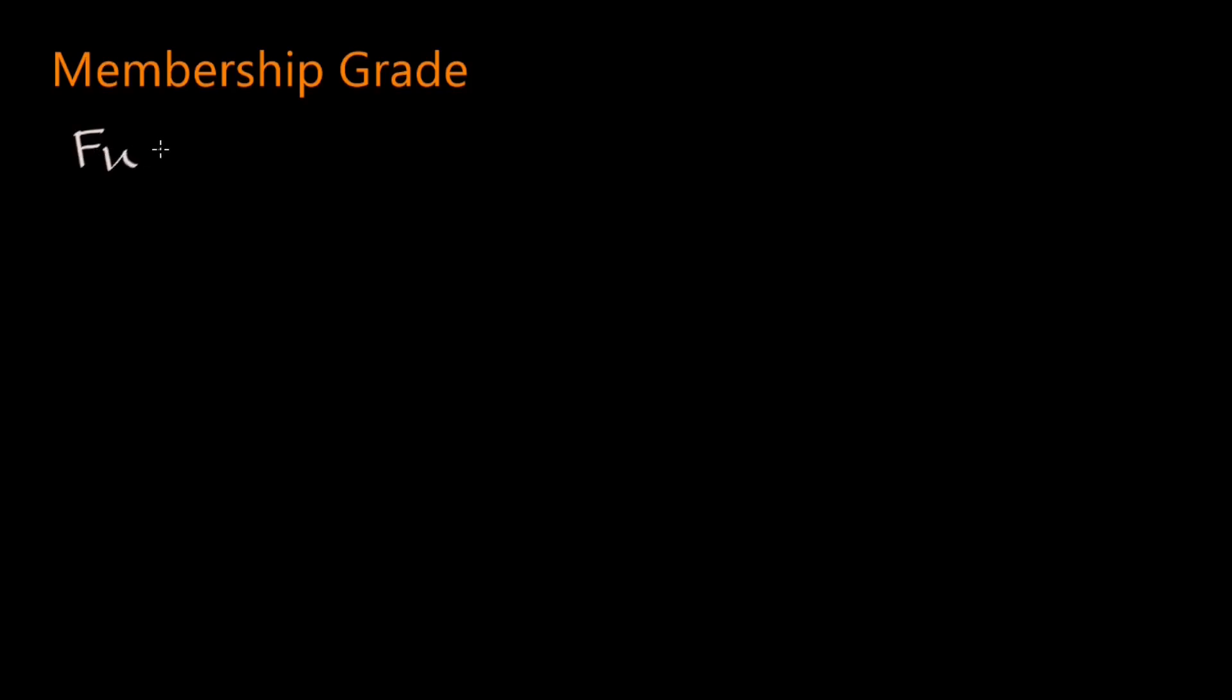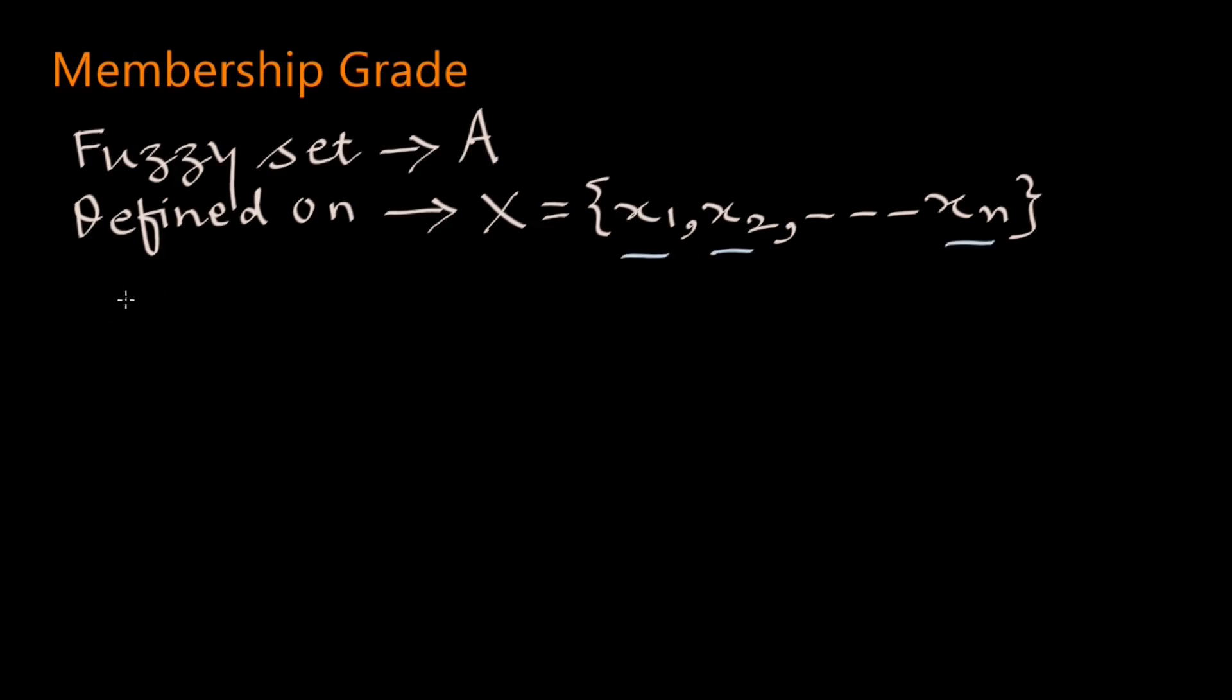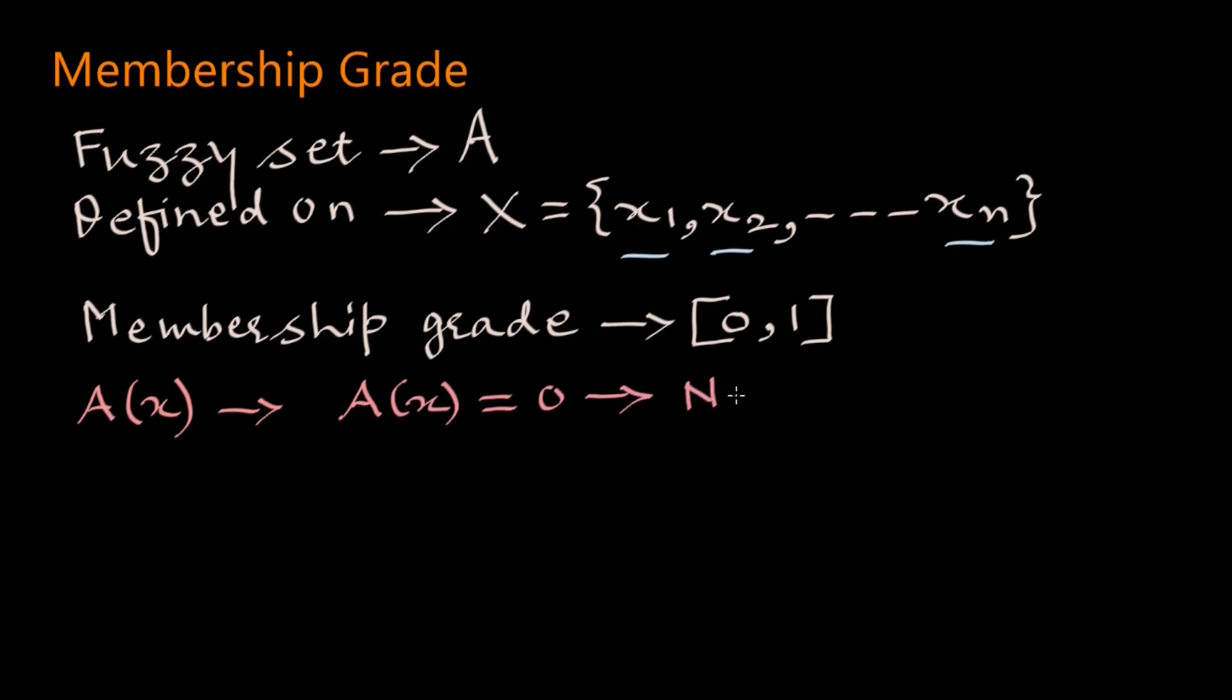Fuzzy set is denoted by A and it is defined on set X, which is set of members X1, X2, etc. Xn, also called a universal set. Each member of X is assigned a membership grade or membership value. Membership grade is any real number in closed interval 0, 1. Membership grade is denoted as A(X) and membership grade 0 means no membership and grade 1 means full membership.